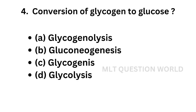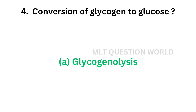Question number 4. Conversion of glycogen to glucose: option A, Glycogenolysis; option B, Gluconeogenesis; option C, Glycogenolysis. The correct answer is option A, Glycogenolysis. Glycogenolysis is the conversion of glycogen to glucose.